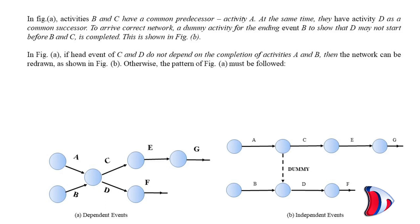To arrive at correct network, a dummy activity from the ending event B is used to show that D may not start before B and C is completed. This is shown in figure B. In figure A, if head event of C and D do not depend on the completion of activities A and B, then the network can be redrawn as shown in figure B. Otherwise the pattern of figure A must be followed.